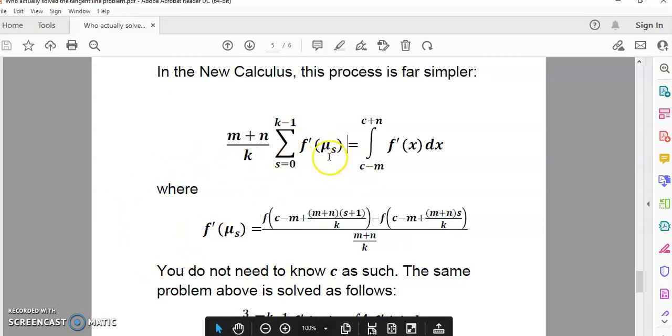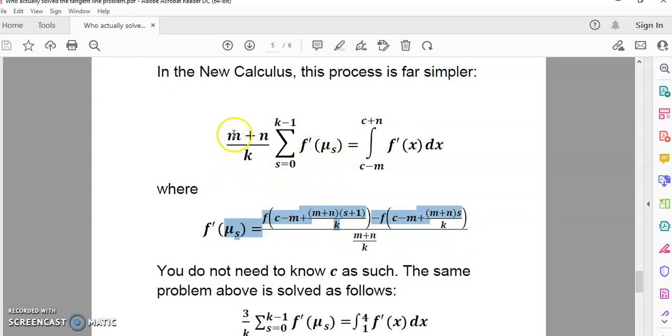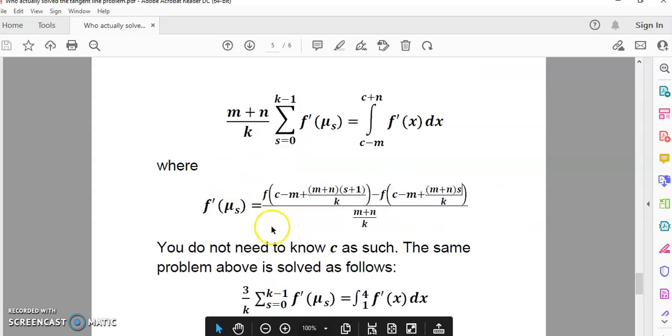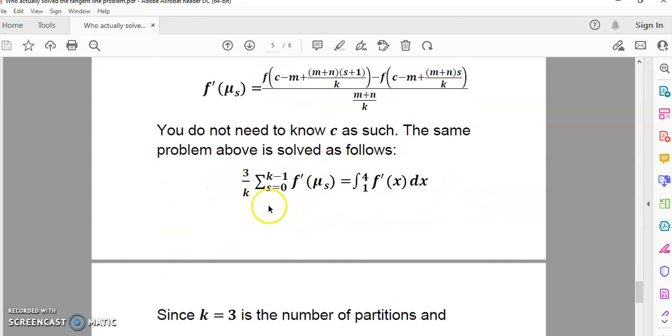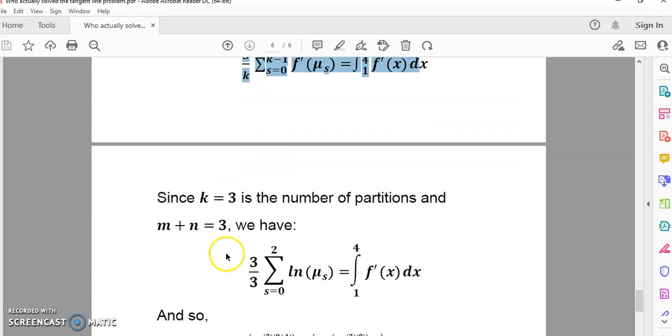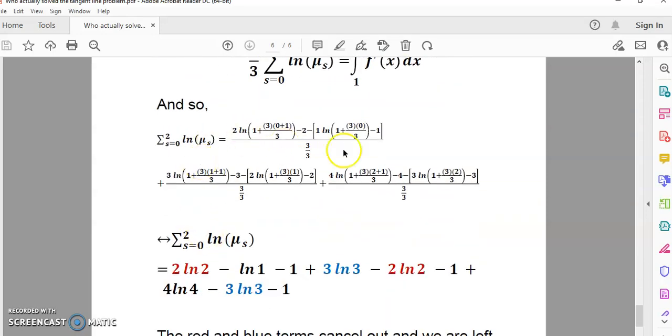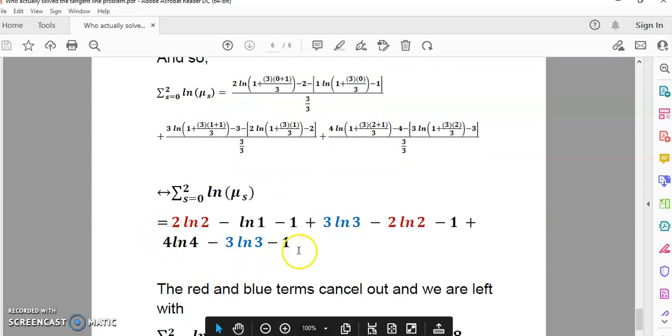F prime of mu sub s is given by this expression here. So, you don't have to actually know mu sub s. Moreover, m plus n is equal to the interval width, because in the new calculus, the derivative is defined rigorously, not as you find in the bogus mainstream formulation, where m and n are horizontal distances from the point of tangency. So, you do not need to know c, and the same problem above is solved as follows. It's given by this expression, and we can expand that expression. I'm not going to spend too much time on it, but you can expand it, and you can see that you'll get exactly the same answer.